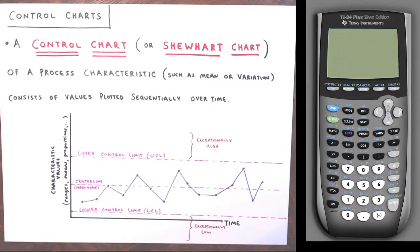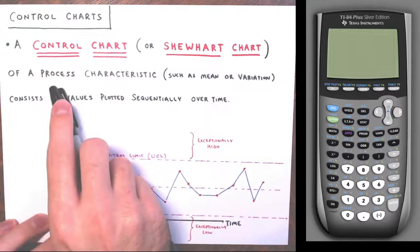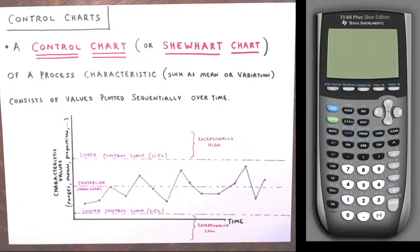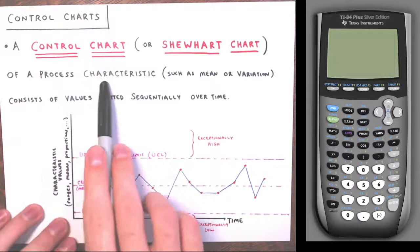These pages I've had up in the past couple videos on statistical process control — what is a control chart, or Shewhart chart, named after Walter Shewhart who first introduced these in 1924. A control chart of a process characteristic, such as a mean or a variation, monitors the center or the spread of a process over time.